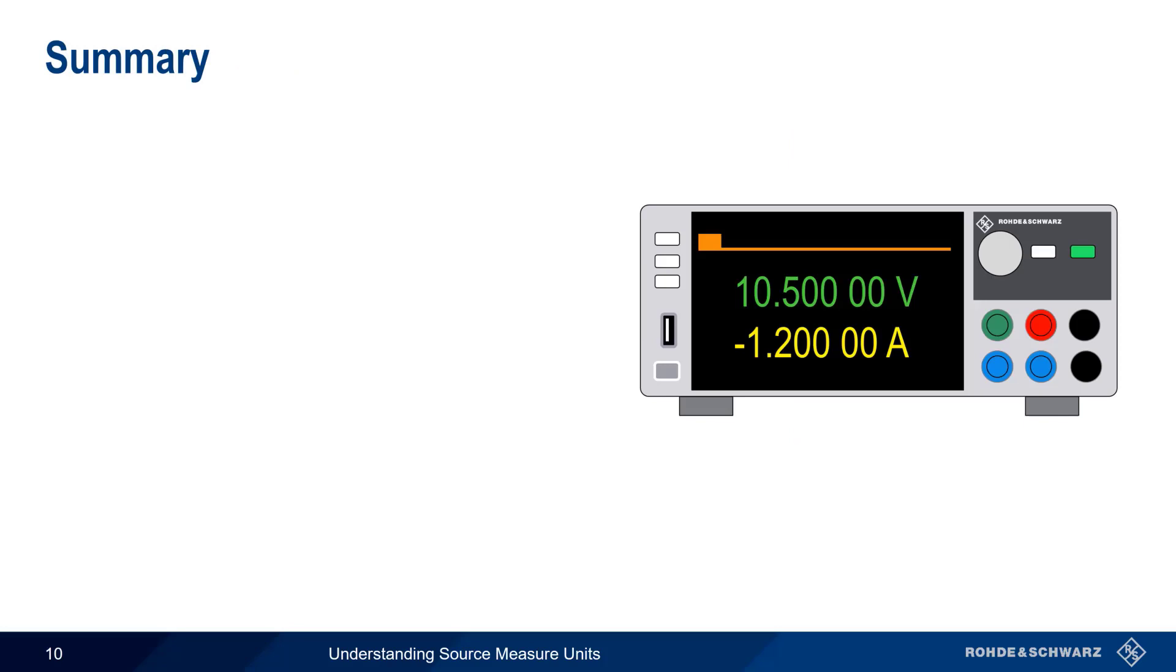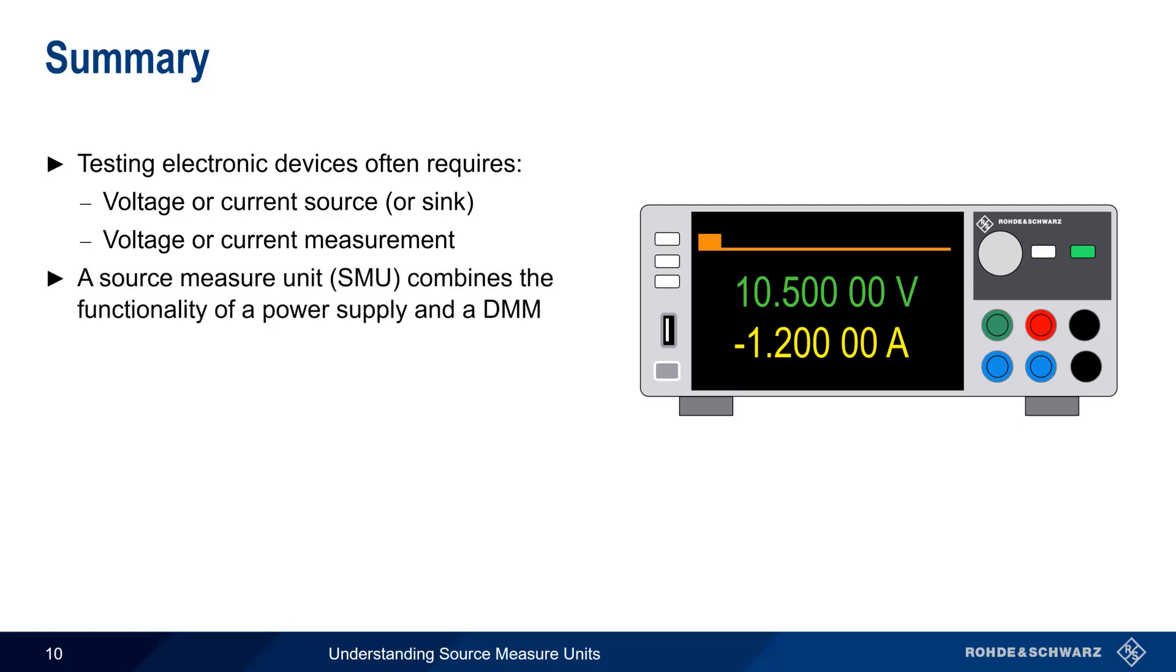Let's summarize what we've covered in this presentation. Testing electronic devices often requires two things, a source or sink of voltage or current, and a means of measuring voltage or current. Traditionally, these two requirements were met using separate instruments, but more recently, these functionalities are being combined into so-called source measure units or SMUs. Furthermore, the design of most SMUs allows them to be operated in all four quadrants, meaning they can behave either as a power source or as an electronic load.